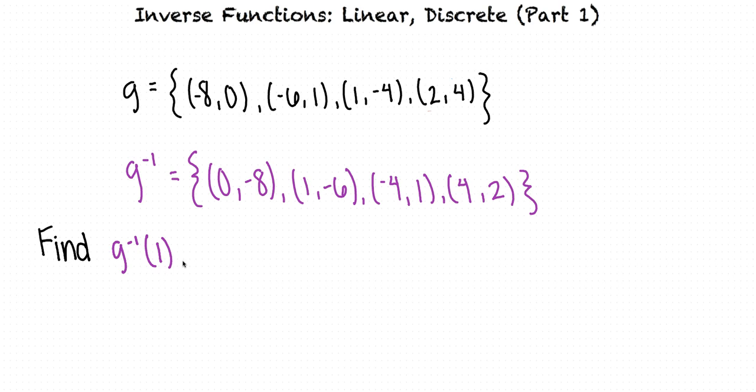Since the domain values are the first number in each ordered pair, we look to see which pair has the first value of one. From there the range value is the second number within that pair.